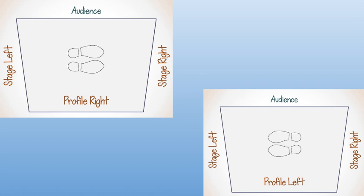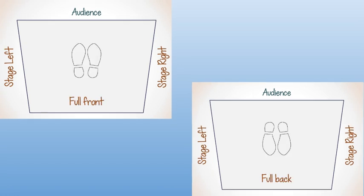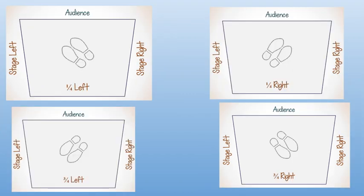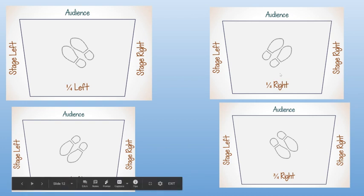Profile right means that you face towards the audience towards stage right. Profile left means stage left. So one more time: full front facing forward towards the audience, full back away from the audience, profile right towards the right, profile left to the left. We also have quarter turns, so we get quarter left, quarter right, and three-fourths.